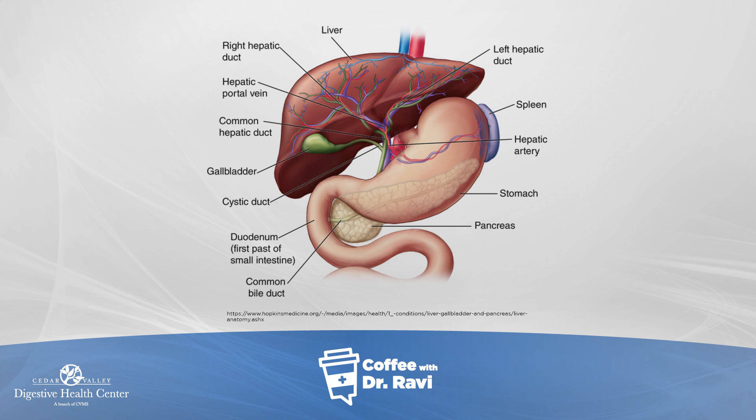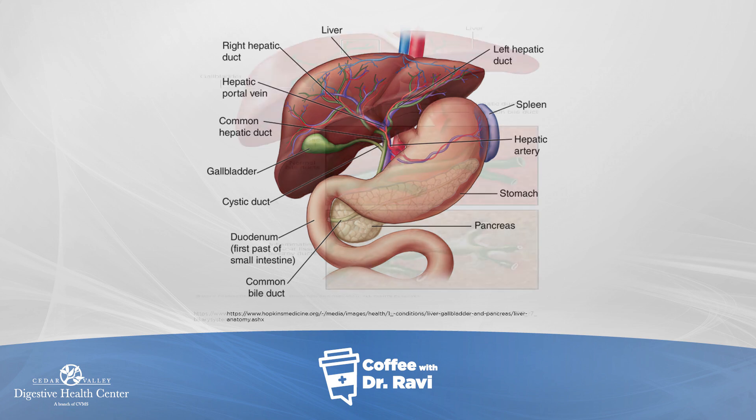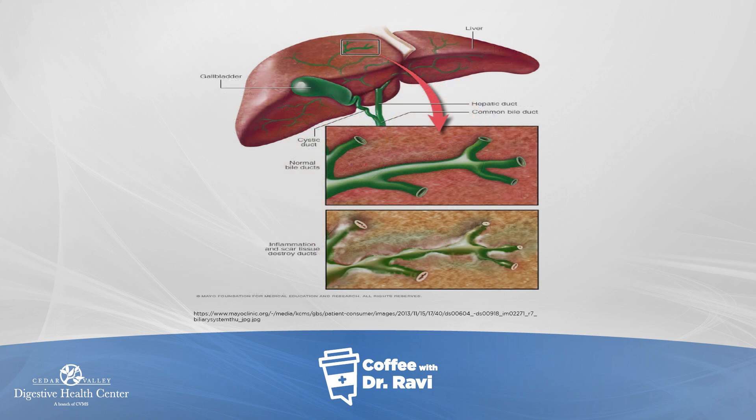Primary biliary cholangitis and primary sclerosing cholangitis — also known as PBC and PSC — affect both the bile ducts on the outside as well as the bile ducts inside the liver. In primary biliary cholangitis, the disease affects the small ducts inside the liver, whereas primary sclerosing cholangitis, as shown on this slide, affects both the bile ducts on the outside and the inside of the liver, or a mixture of both.